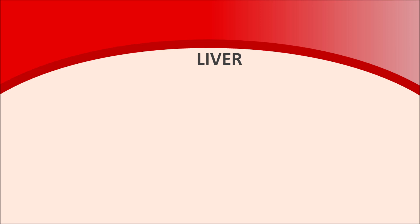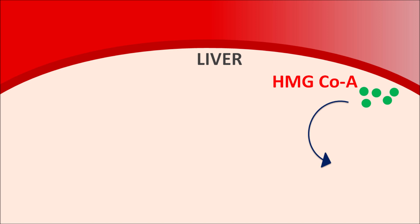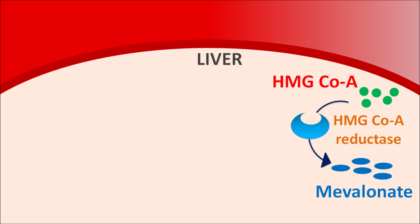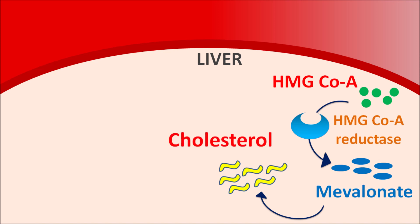Now let us see how this drug acts within the liver. Cholesterol is biosynthesized from the mevalonate pathway. One important intermediate within this pathway is HMG-CoA. This HMG-CoA is converted into mevalonate by the enzyme HMG-CoA reductase, which produces the rate-determining step. The total biosynthesis of cholesterol within the liver is therefore controlled by HMG-CoA reductase.